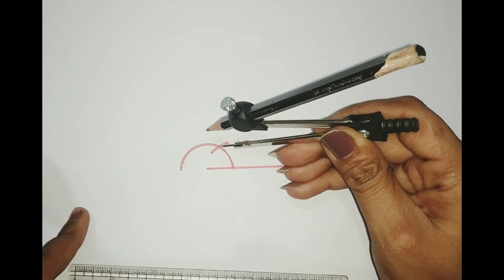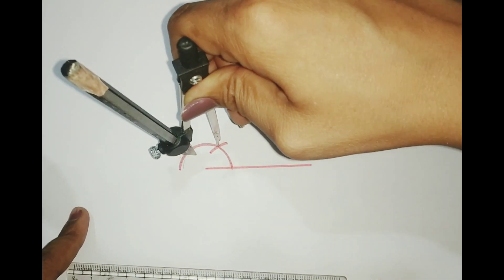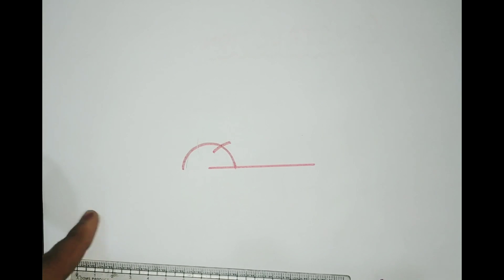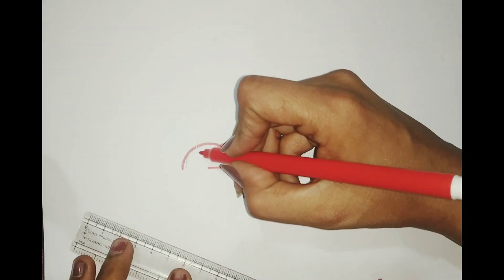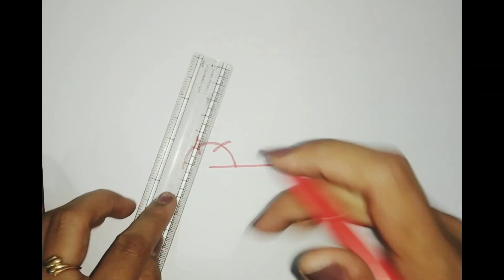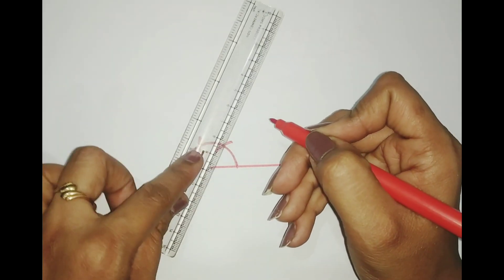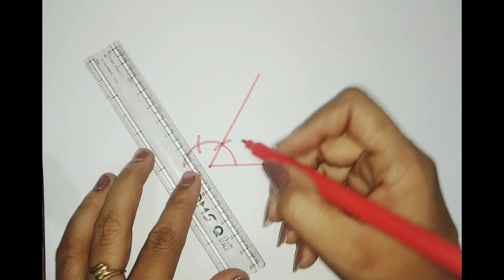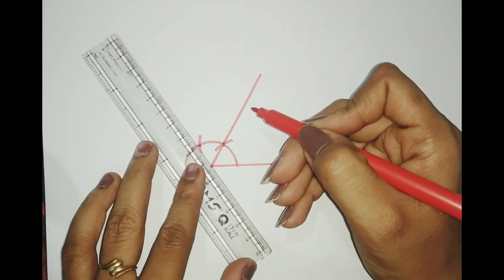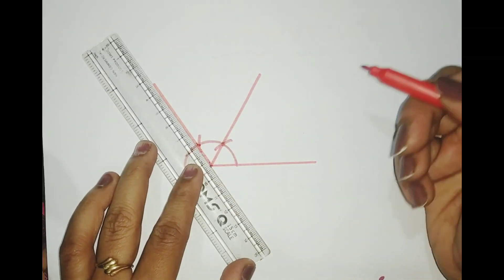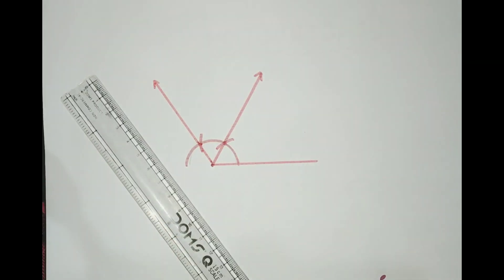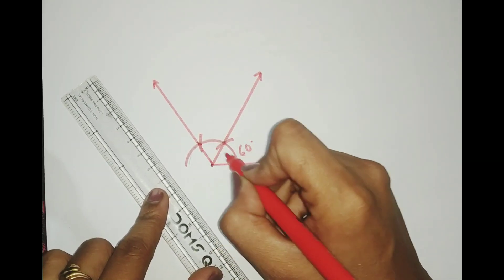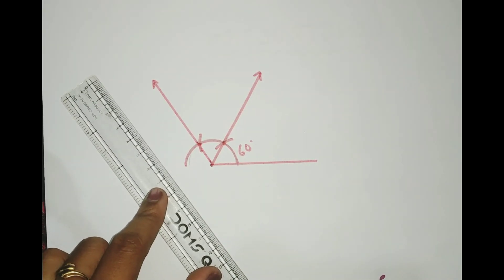Now, keeping my compass point exactly at this position, if I cut another arc, that angle is nothing but 120 degrees. So from this one setup we got two angles. If I draw a line from this point passing through that arc, that gives 60 degrees. If I draw a line from this point to the next arc, that gives 120 degrees. So we've made two angles quickly.